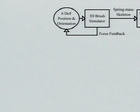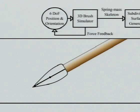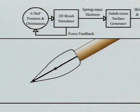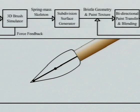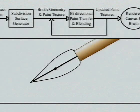The haptic device provides the 6-degree orientation of the brush to the system and sends force feedback to the user. The bristles of the brush are modeled with a spring-mass particle system skeleton. This is surrounded by a subdivision surface to represent its actual extent. The brush deforms, as expected, upon collision with the canvas.